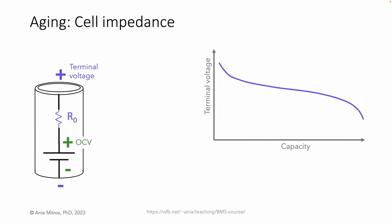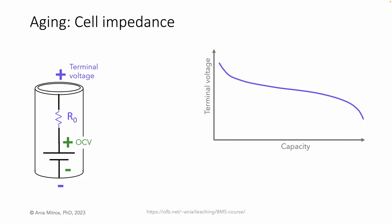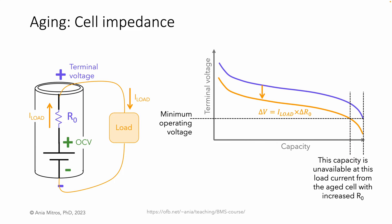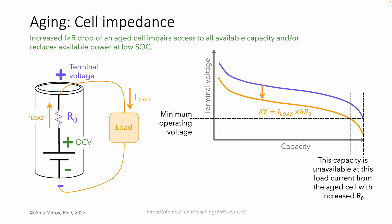Aging also affects cell impedance. Cell impedance matters when current is flowing into or out of a battery. With a load current applied, the cell's internal impedance results in a voltage drop — I times R. For every cell, the manufacturer defines some minimum operating voltage at which we stop discharge. Due to cell impedance, when we have a current load, we reach that minimum operating voltage before the cell is fully discharged. We cannot use that last bit of capacity at our typical load current, and either need to accept that capacity loss or reduce the current as we approach 0% SOC. The more aged a cell is, the higher its impedance, and the larger this effect.